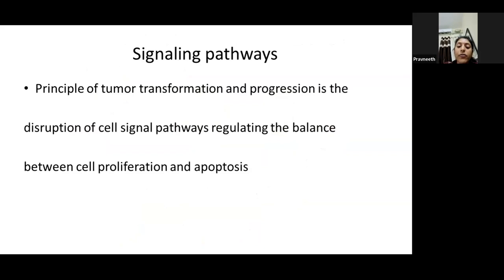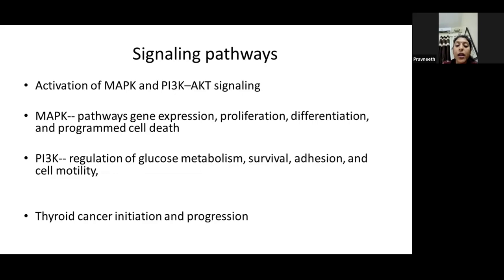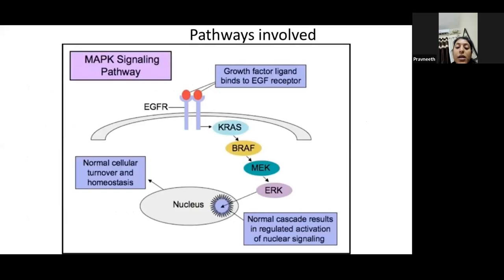There are three important signaling pathways in thyroid cancer. Knowing these pathways tells us where various drugs act. The pathways signal proliferation and apoptosis: MAPK and phosphatidylinositol-3 (PI3K) pathways. MAPK is involved in gene expression, proliferation, differentiation, and cell death. The PI3K pathway is involved in glucose regulation, cell survival, adhesion, and cell motility — essentially MAPK for DNA/cell proliferation and PI3K for cell survival and movement.